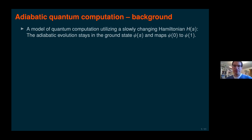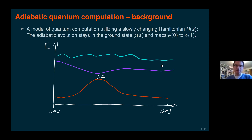The idea is that if the Hamiltonian changes very slowly, then the adiabatic evolution will map the initial ground state ψ₀ to the final ground state ψ₁ by approximately staying in the instantaneous ground state of H(s). To see how slowly one should change the Hamiltonian, it's useful to consider the energy levels, and here I've plotted the three lowest energy levels as a function of s.